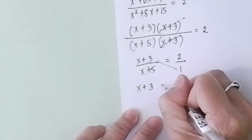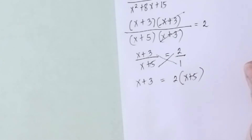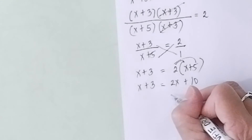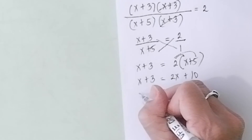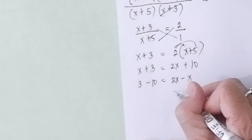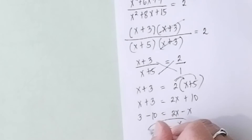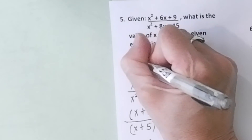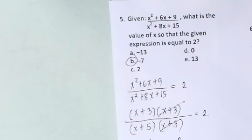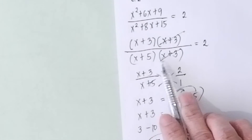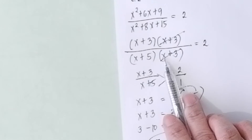Cross multiply: x + 3 equals 2 times (x + 5). Simplify: x + 3 equals 2x + 10. Transpose x to the other side and transpose 10: 3 minus 10 equals 2x minus x, so x equals negative 7. Is it in the domain? Yes — negative 7 is acceptable. If the answer had been negative 3 or negative 5, those would be extraneous roots because they make the denominator zero, and division by zero is undefined.